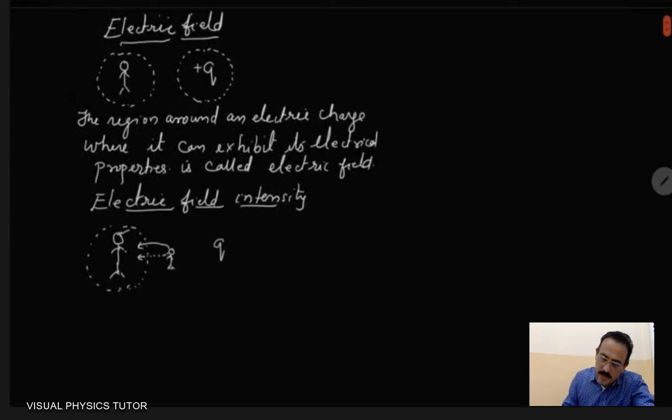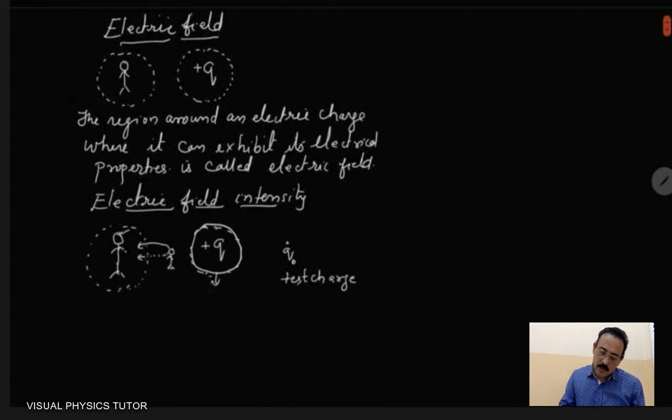Now in the same way, if you take an electric charge and then the region around is called as an electric field. Now suppose we bring another charge. Suppose this charge is called as q0. This charge can be called as test charge. And this charge here can be called as source charge.